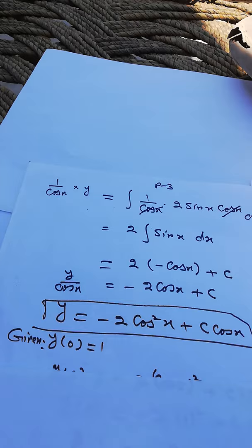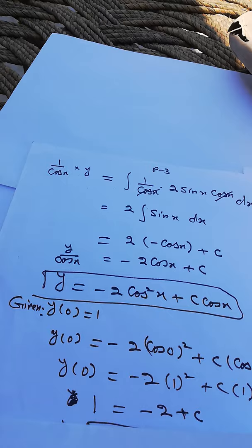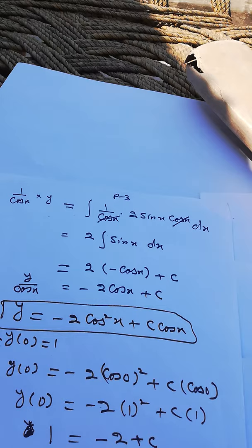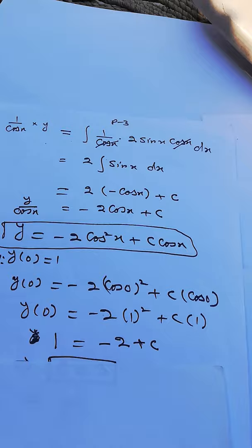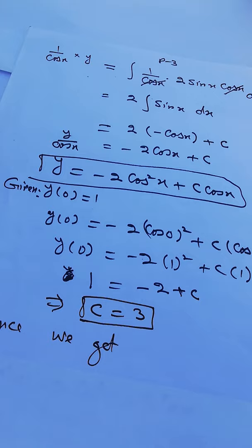Applying the initial condition y(0) equals 1: substituting x equals 0 into the solution gives 1 equals minus 2 cos squared(0) plus C times cos(0), which simplifies to 1 equals minus 2 plus C.